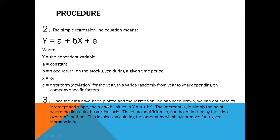Step three: once the data have been plotted and the regression line has been drawn, we can estimate its intercept and slope, the a and b values in Y equals a plus bX. The intercept a is simply the point where the line cuts the vertical axis. The slope coefficient b can be estimated by the rise over run method. This involves calculating the amount by which k sub j increases for a given increase in k sub m.